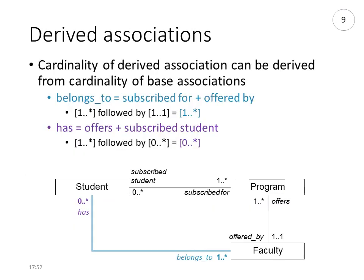For this derived association, it is possible to also determine the cardinality and multiplicity. Assume that navigating from student to faculty defines the derived association 'belongs to'. We can then determine how many faculties a student belongs to, minimum and maximum. For the minimum, a student is subscribed for at least one program and each program belongs to at least one faculty, so a student will always belong to minimum one faculty. For the maximum, a student can be subscribed for many programs, and even though each program has only one faculty, those faculties can be different, so a student can belong to many faculties.